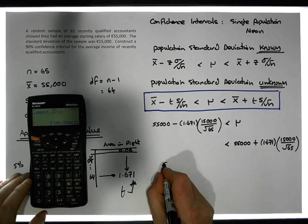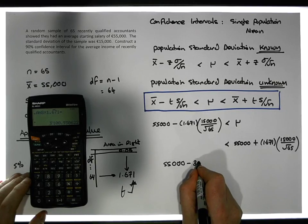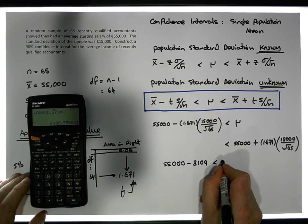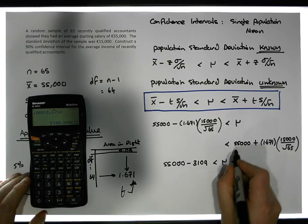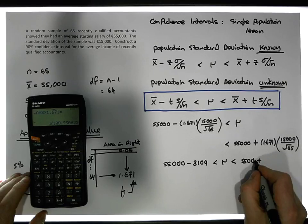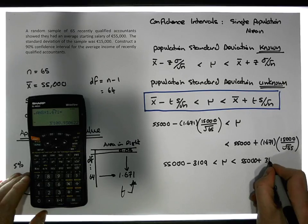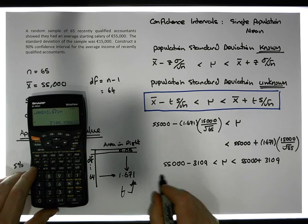So this becomes 55,000 euros minus 3,109 euros must be less than the population mean, which must be less than 55,000 euros plus 3,109.